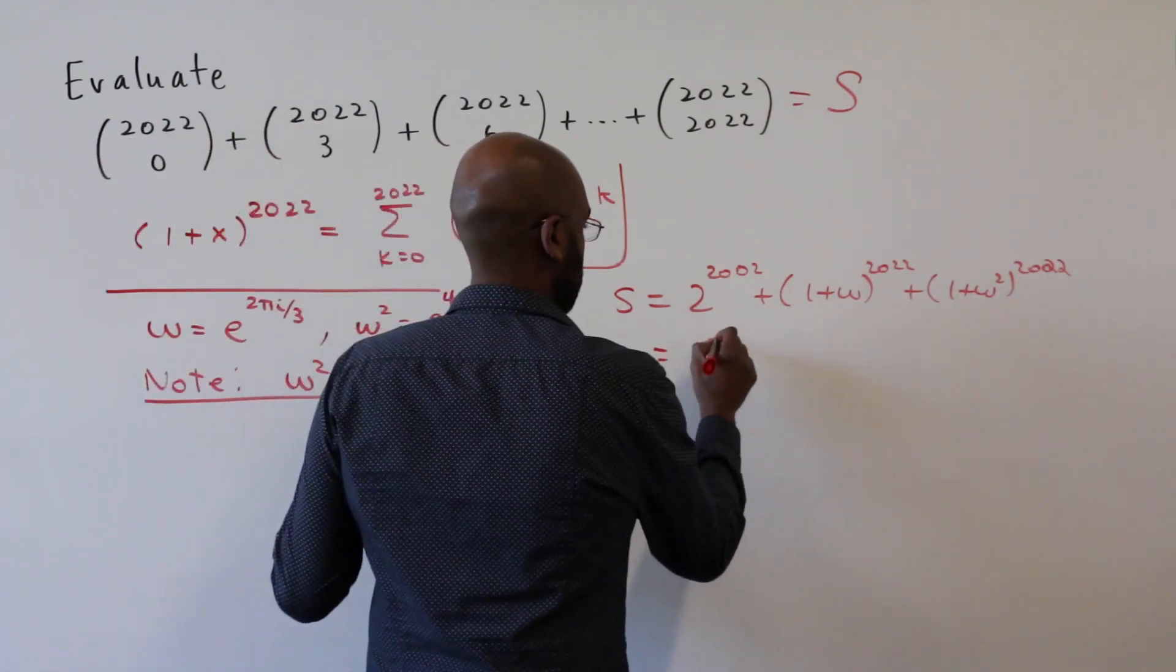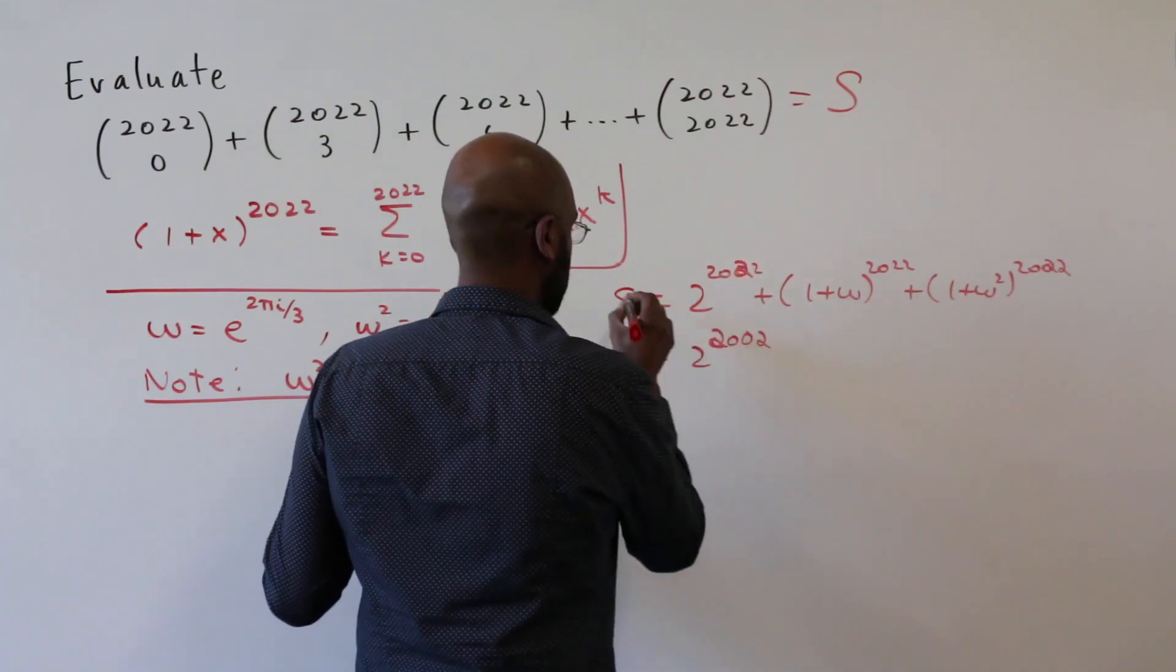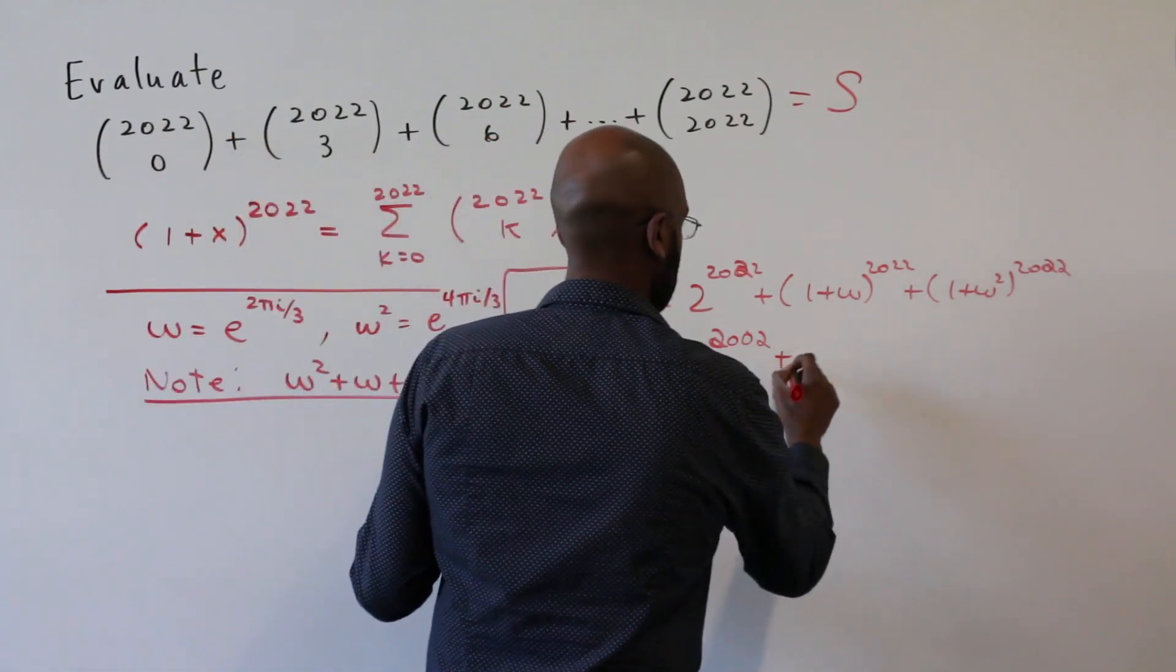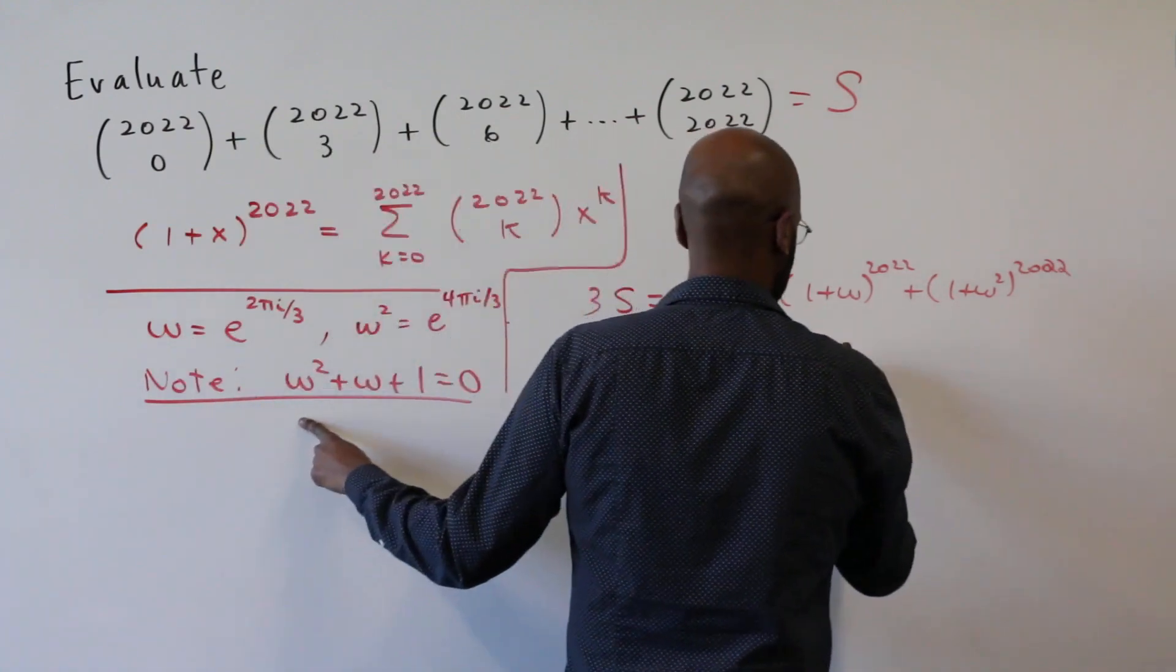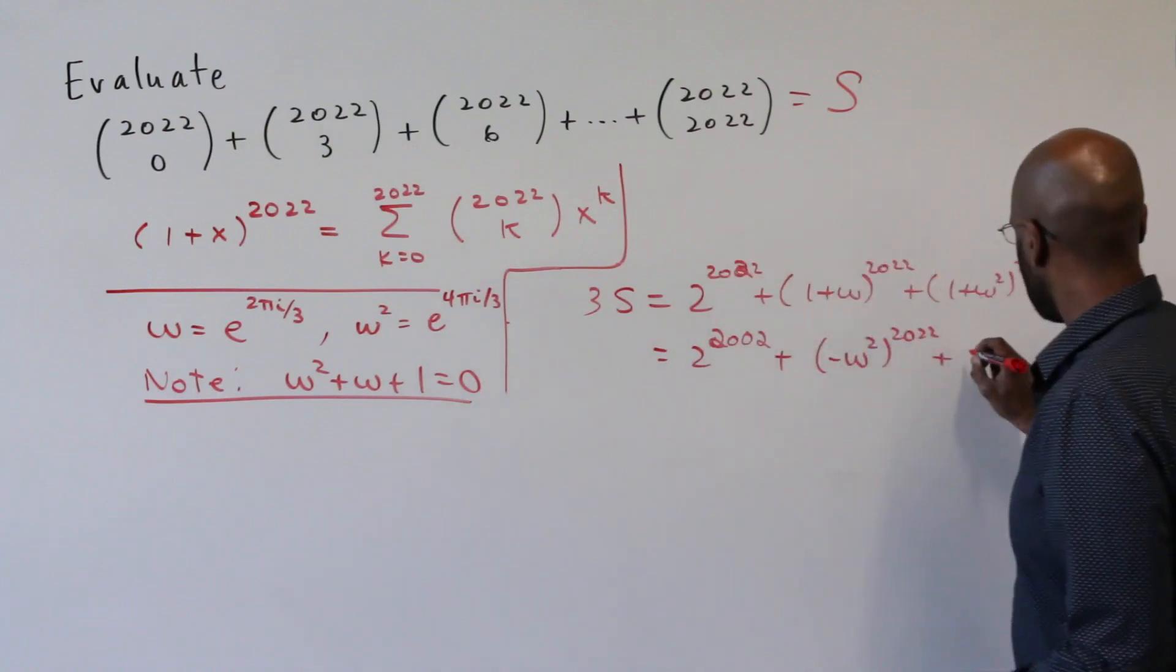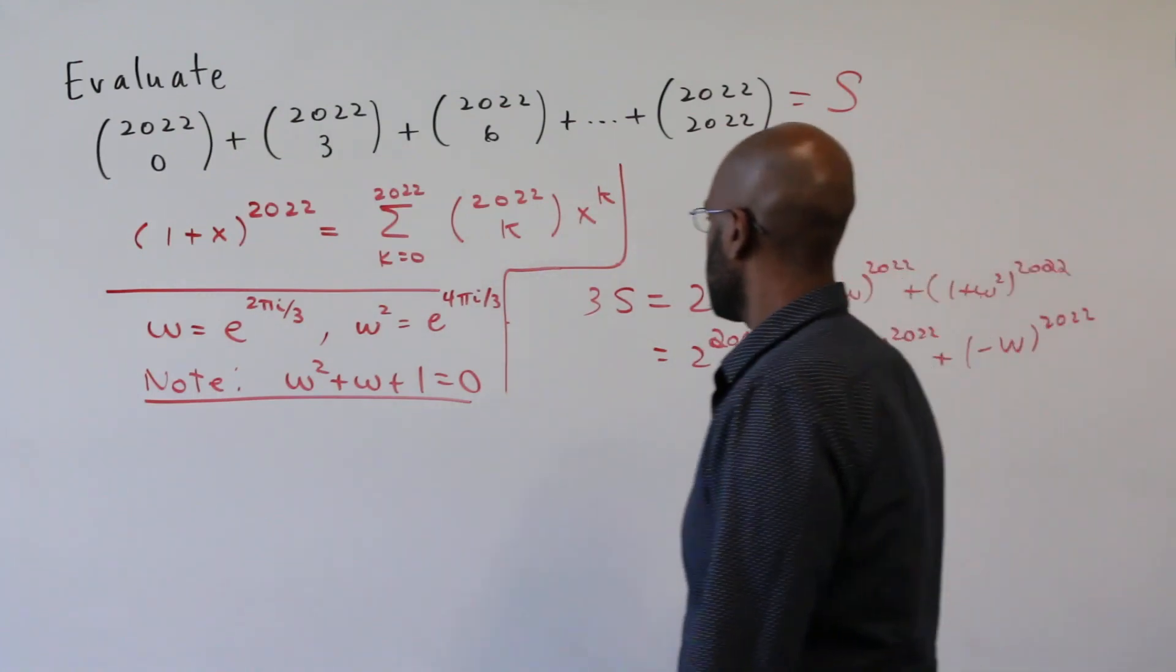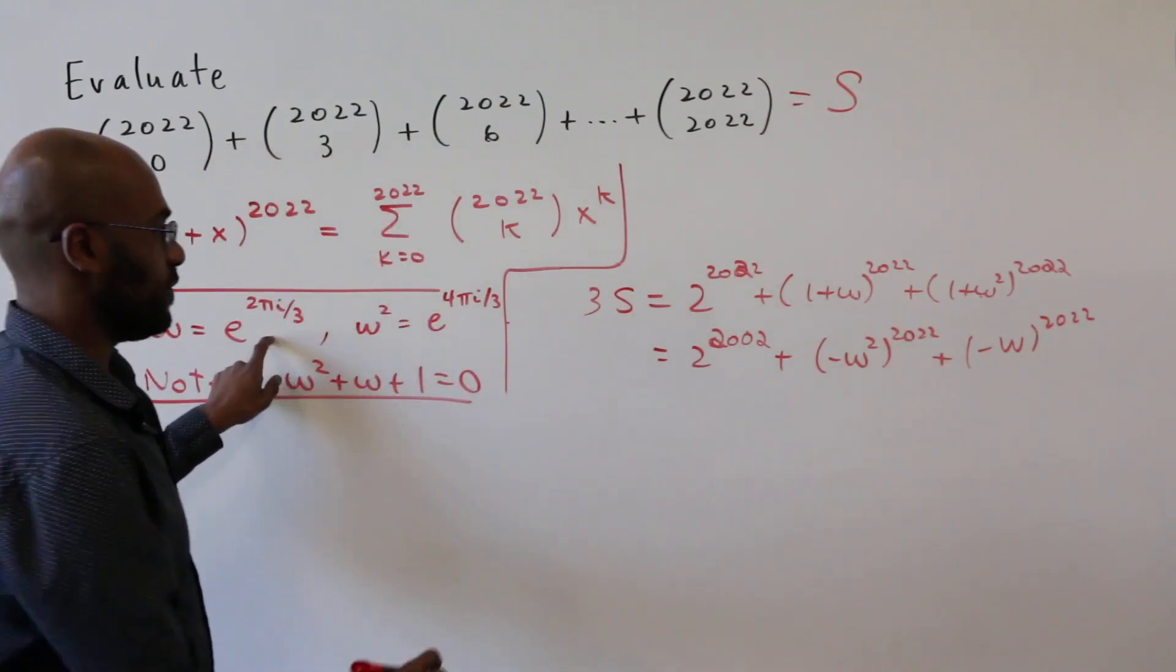Okay, we can simplify this a little bit more using this expression here again. So I'll leave the two to the 2022 on the power of two here. And here, one plus omega is negative omega squared. So I'll write that down. Negative omega squared to the 2022. And then similarly here, we have a negative omega to the 2022.